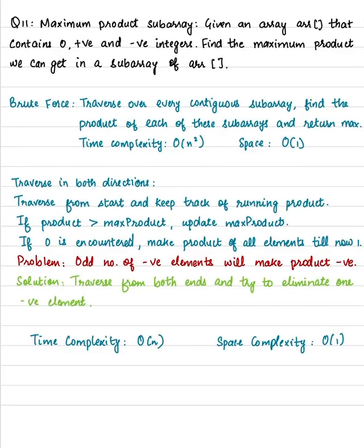Hi everyone, welcome back to Tech with Zui. Today's question is maximum product subarray. Given an array that contains both positive, negative, and zero as integer values, find the maximum product we can get in a subarray of the given array.